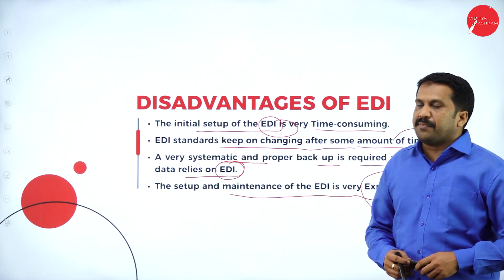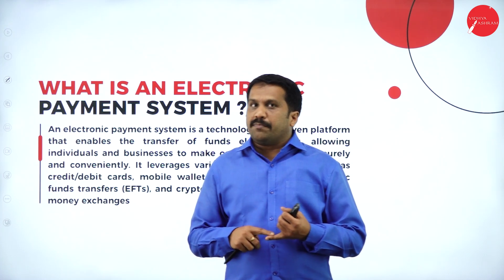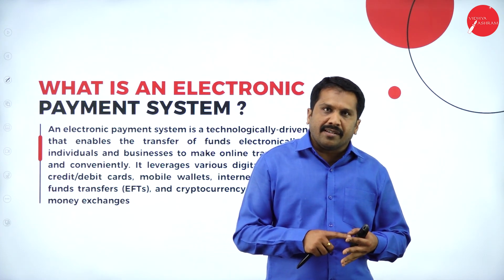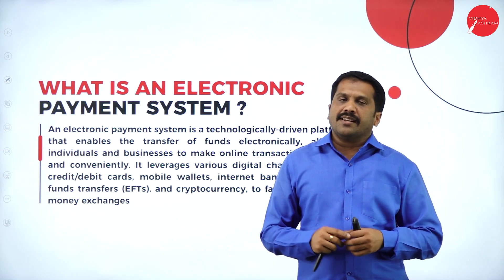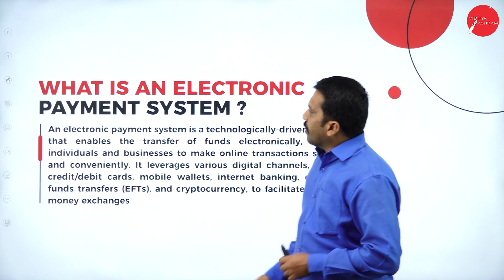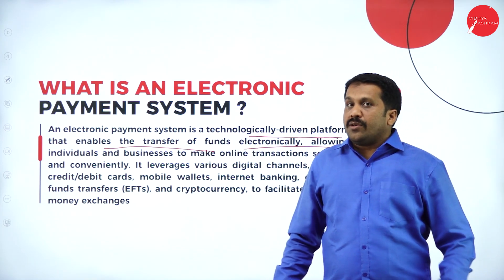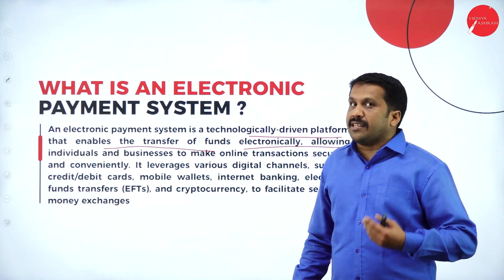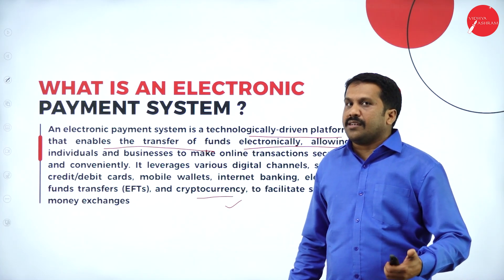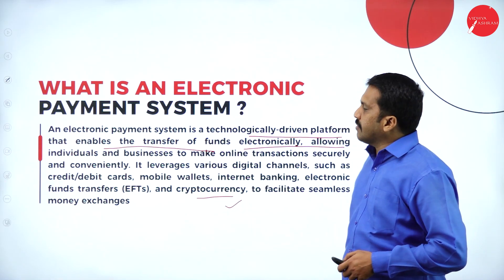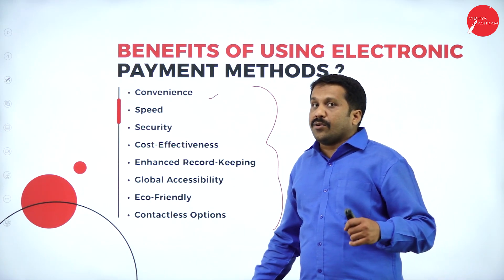What is an electronic payment system? Just open your mobile — you have Google Pay, PhonePe, Paytm, Airtel Money — these are your electronic payment systems. You also have debit cards and credit cards. An electronic payment system is a technology-driven platform that enables the transfer of funds electronically. You can make bank transfers, do RTGS for larger amounts. Even cryptocurrency is used, though in India it is not legally advisable — other countries use it.